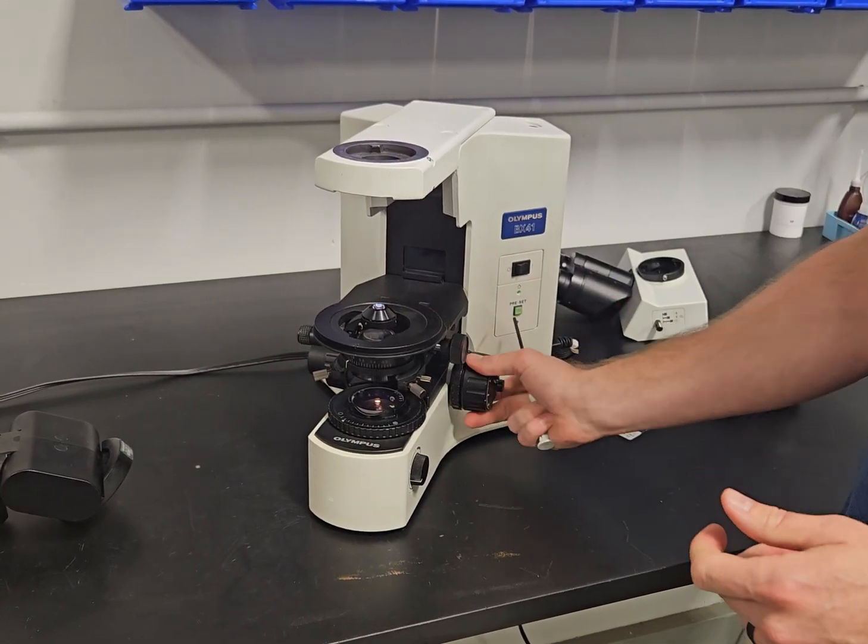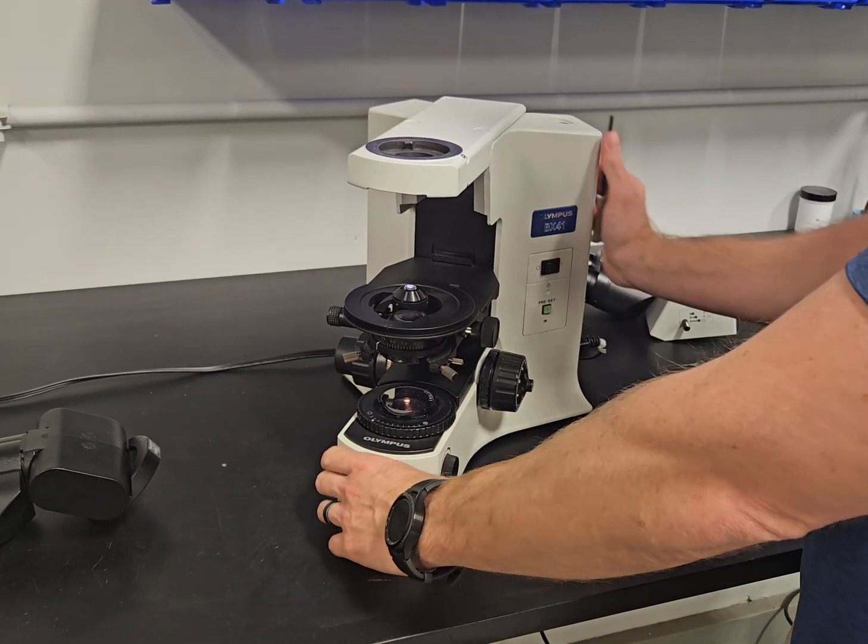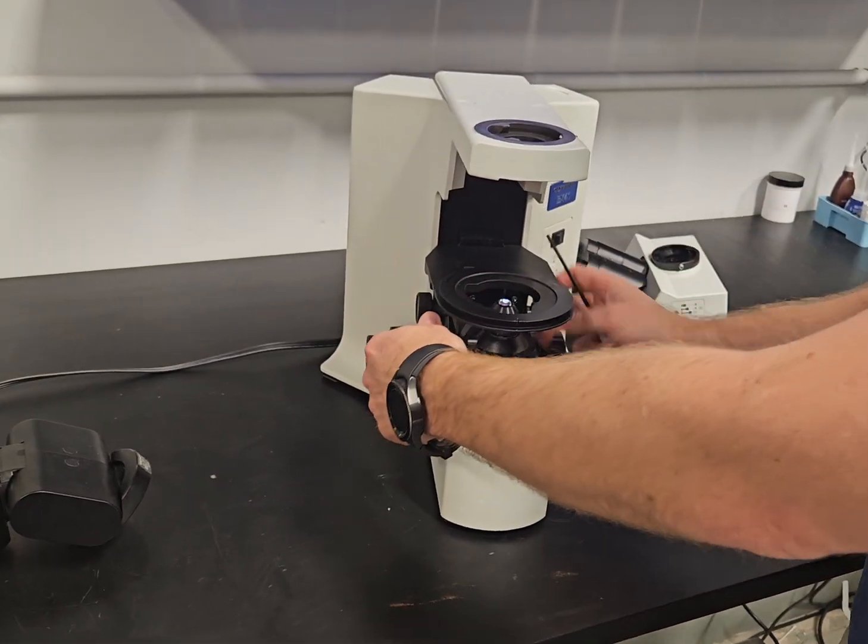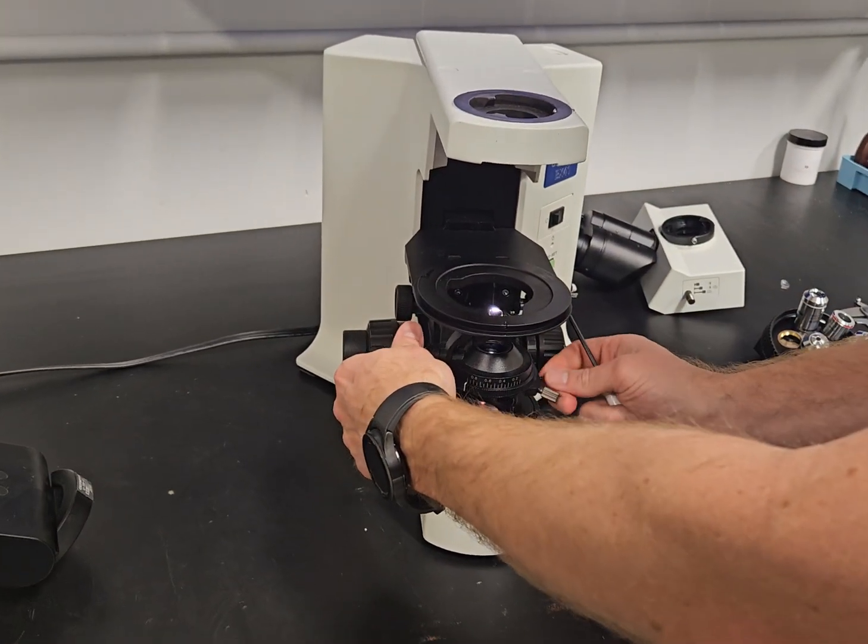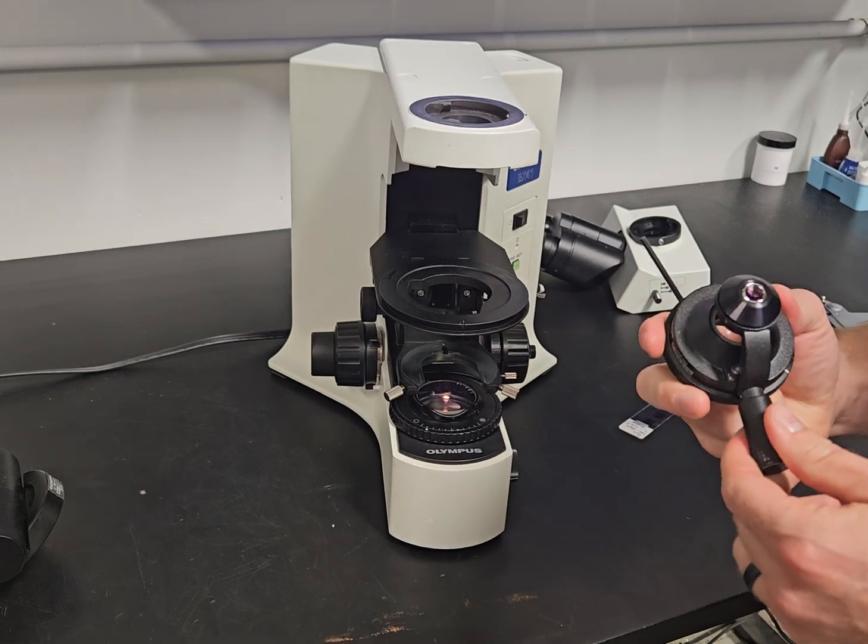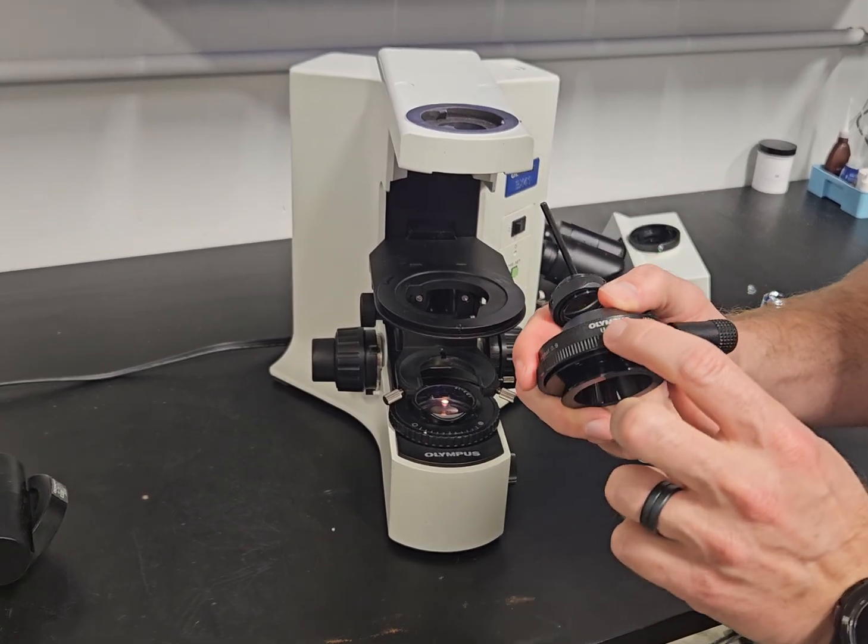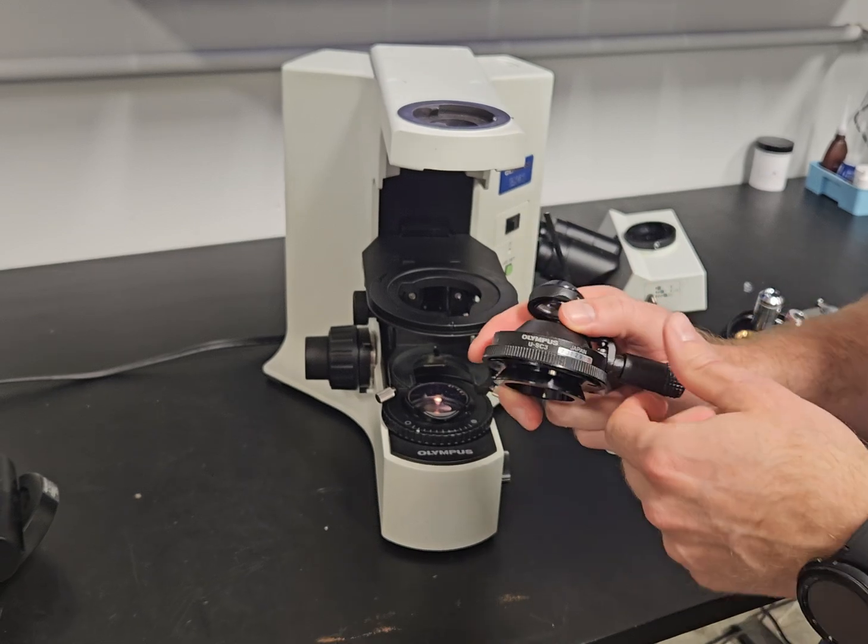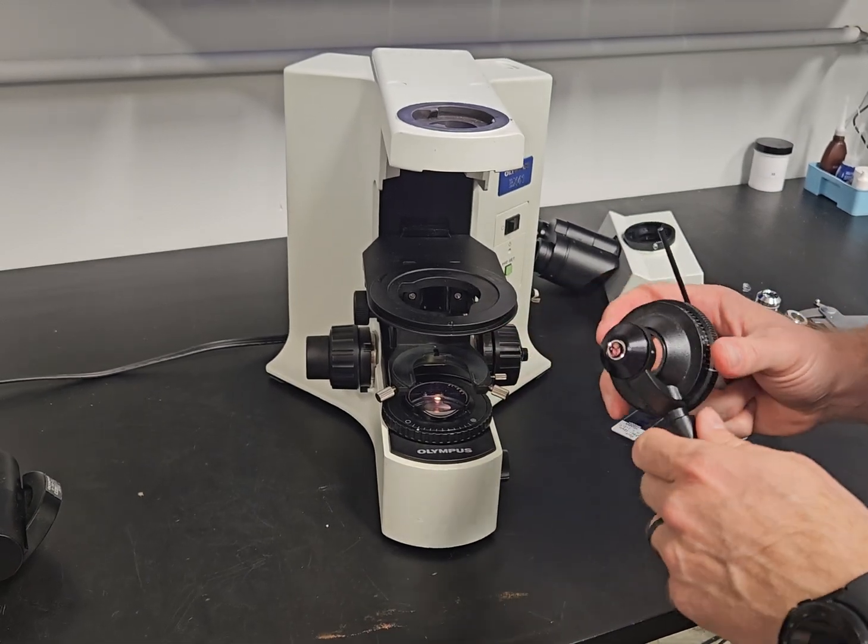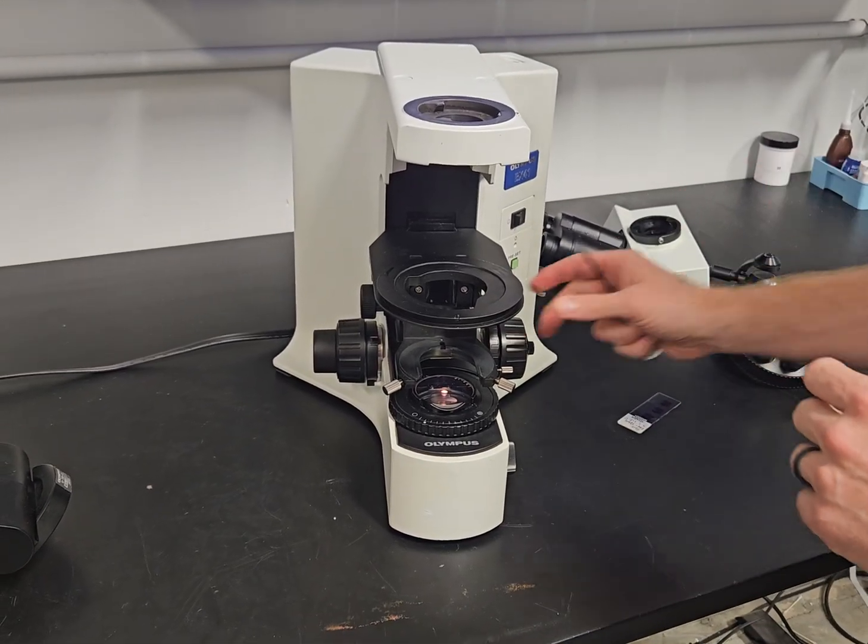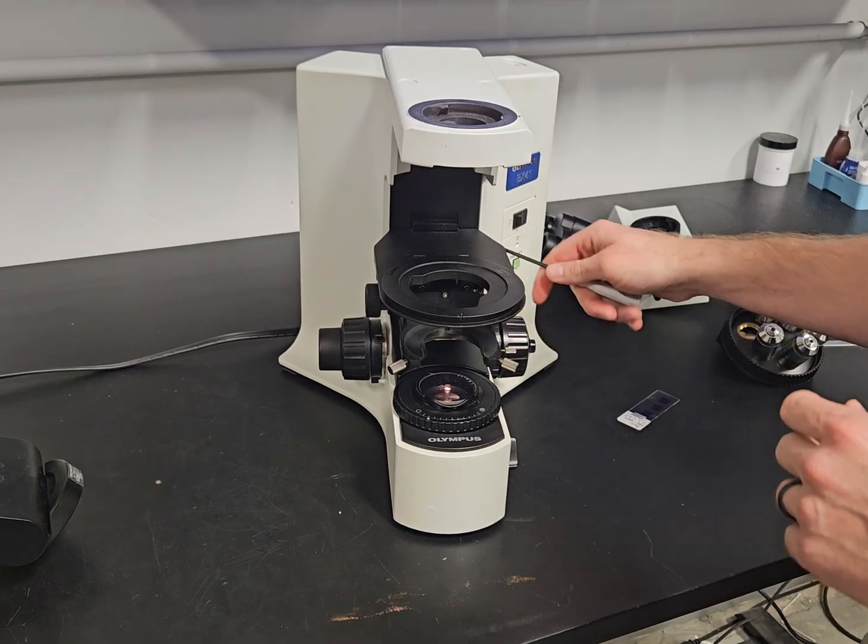Once this is off, we have the flip out condenser. This flip out condenser, the reason that we have this on here is so you can fill the field with the 2X and the 1.25. It's a U-SC3. This is an excellent condenser. You're going to see this a lot or pretty much on all the pathology scopes that use the low magnification.